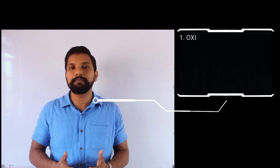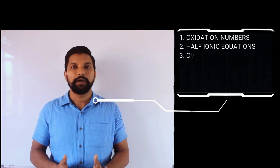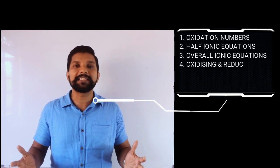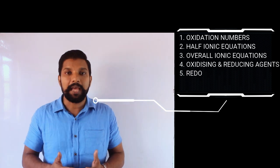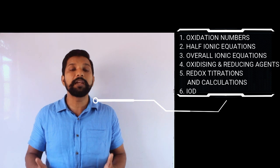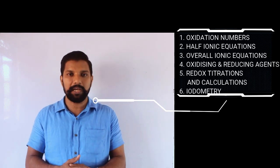We have now come to the end of the Redox lesson. We started from oxidation numbers, went through half ionic equation balancing, balancing overall ionic equations, oxidizing and reducing agents, redox titration practical aspects, and finally iodometry as one of the most widely used redox titrations. I hope you have enjoyed this video and understood the lesson well. Thank you.